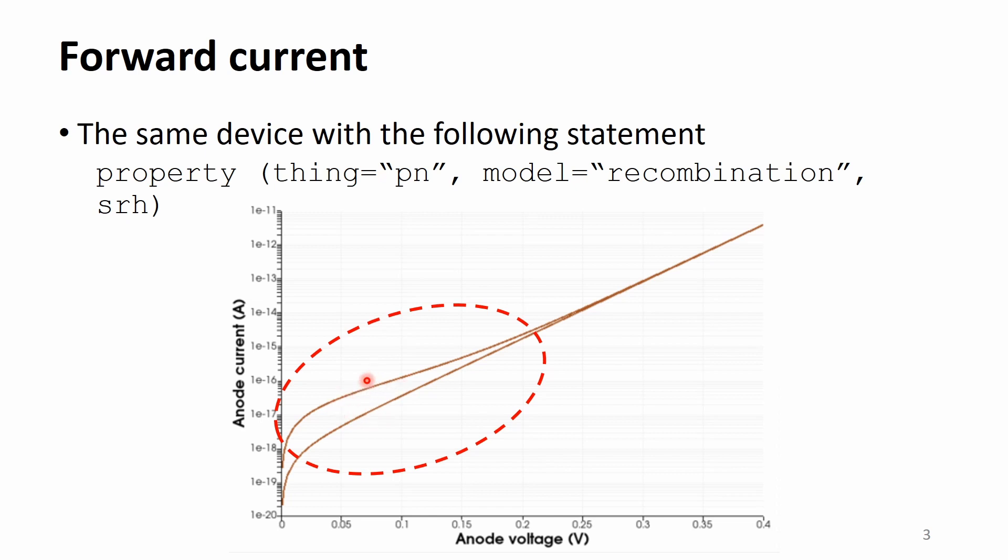Such an increase is related with the SLH center. In this forward bias, the electron hole recombination occurs at the depletion region. Therefore, the contacts should provide more electrons and holes to maintain the same internal carrier profile, and it increases the current.